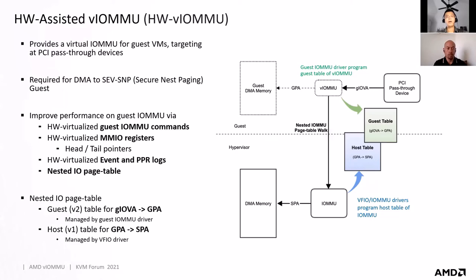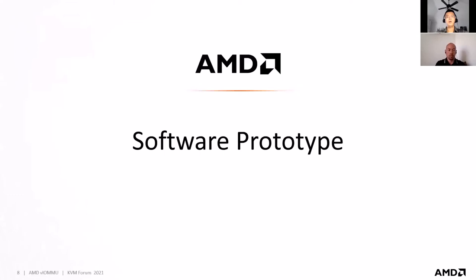Hardware VIOMMU requires the use of nested IOMMU page tables. On the diagram's right-hand side, inside the guest VM, the guest IOMMU driver programs a V2 table that translates from guest IOVA to guest PA. On the hardware IOMMU at the bottom, the host IOMMU driver programs a V1 table that translates from guest PA to SPA. You can view it as a nested IOMMU page table approach, and we expect it will perform better than the shadow IOMMU page table-based approach. This concludes the quick recap about hardware VIOMMU.